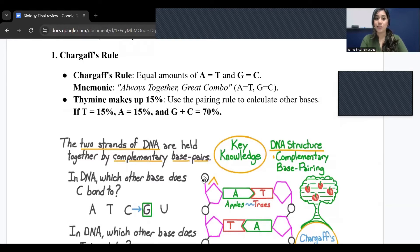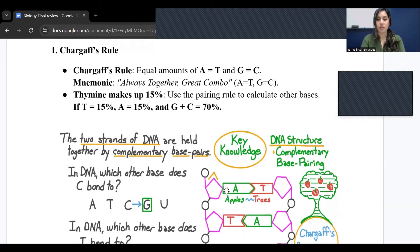Also, make sure you know that thymine makes up 15%. So using that pairing rule to calculate the other bases. If thymine is 15%, adenine would also be 15% because they are paired together, and then guanine and cytosine would make that additional 70%.